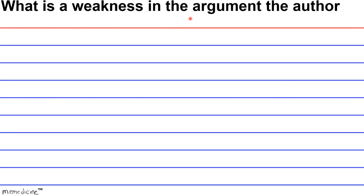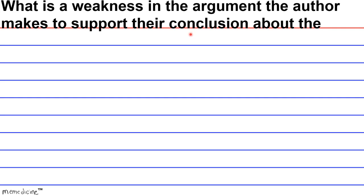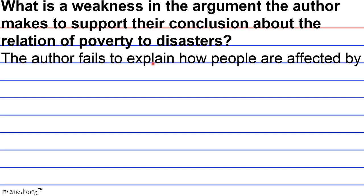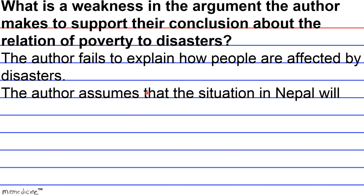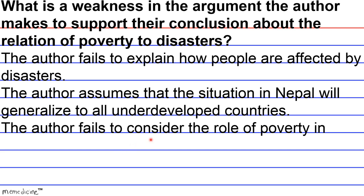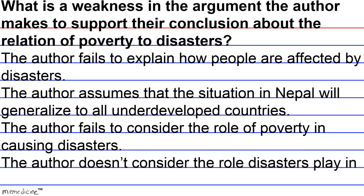What is the weakness in the argument the author makes to support their conclusion about the relation of poverty to disasters? Is it A, the author fails to explain how people are affected by disasters? Is it B, the author assumes that the situation in Nepal will generalize to all underdeveloped countries? Is it C, the author fails to consider the role of poverty in causing disasters? Or is it D, the author doesn't consider the role disasters play in causing poverty?